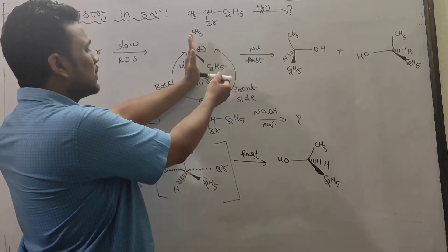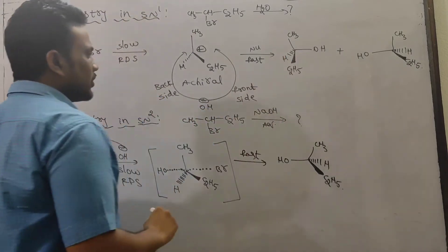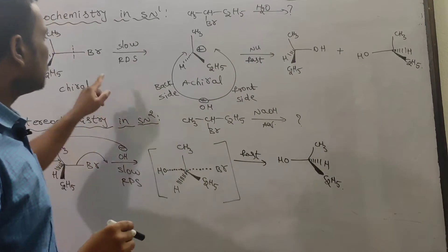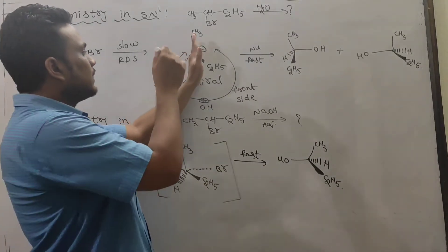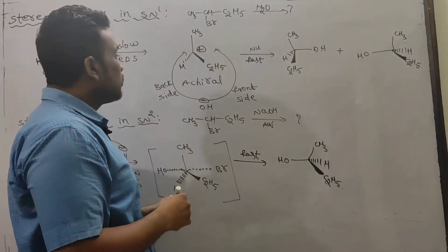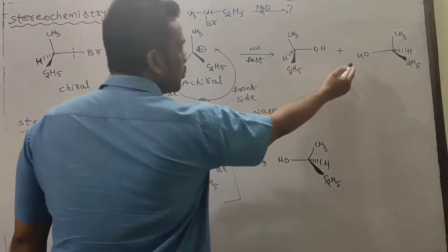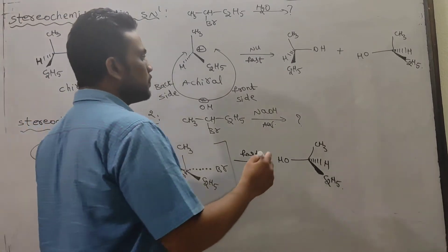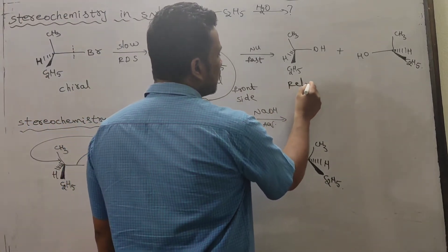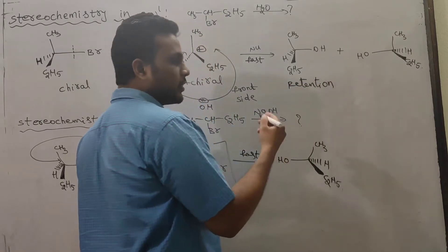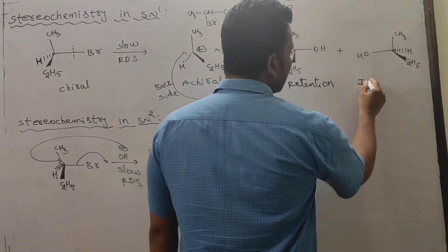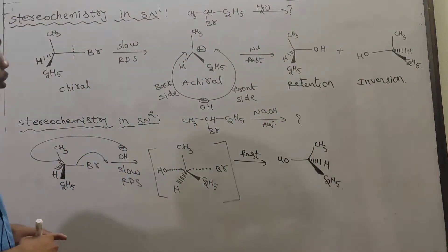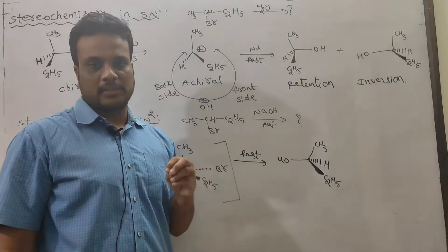In this planar arrangement, attack is possible from both the front side and the back side. Front side attack gives a configuration similar to the substrate — the nucleophile is in the place of the leaving group. Back side attack gives the isomer opposite to the substrate, where the wedge group is present opposite to the bromine. So front side gives retention of configuration and back side gives inversion of configuration.